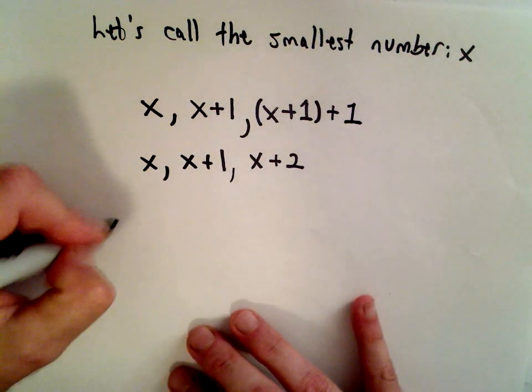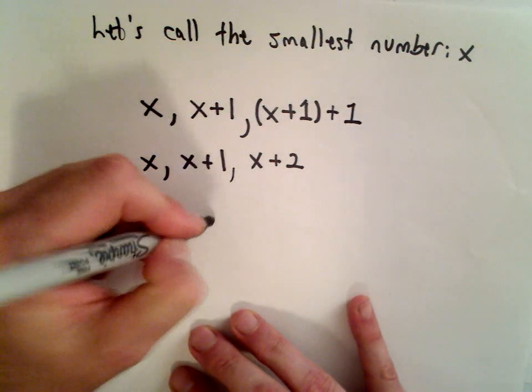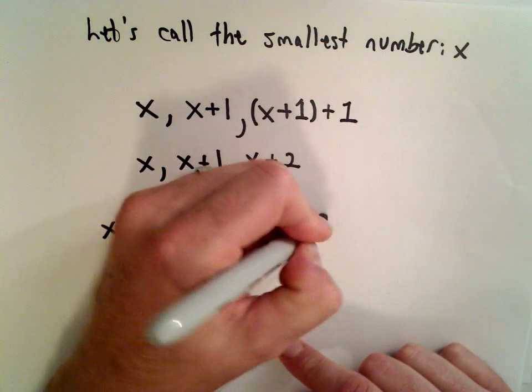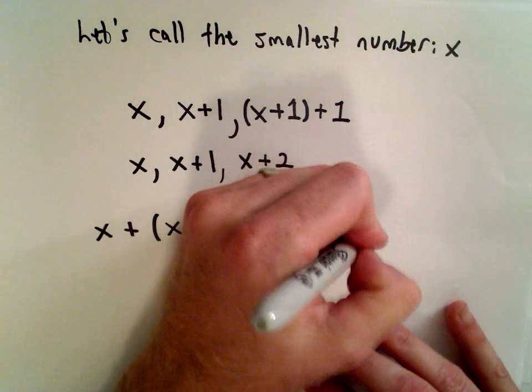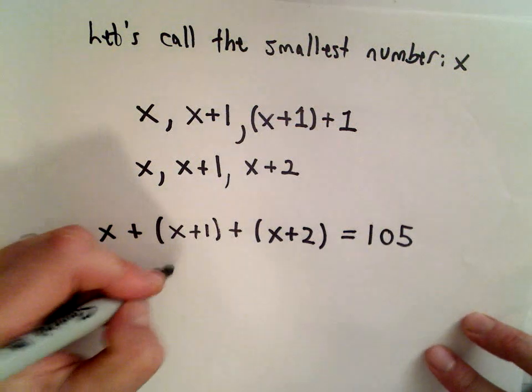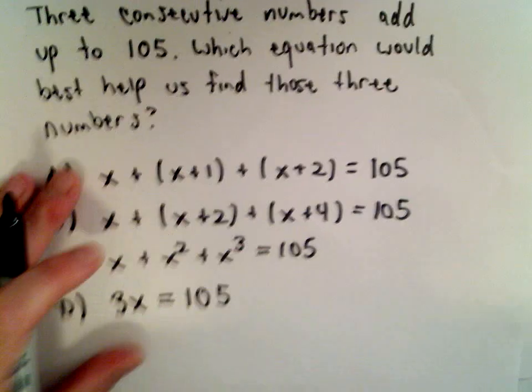Now since we're adding them up, we would have x plus the next number x plus 1, plus the next number x plus 2. We want to add those numbers up and get the value 105. So it looks like answer choice A was our correct choice in this case.